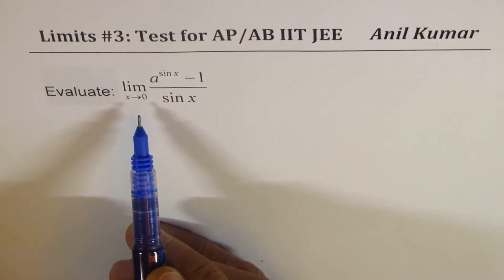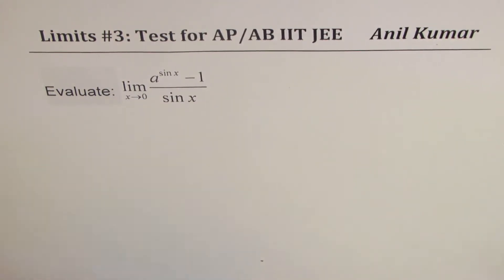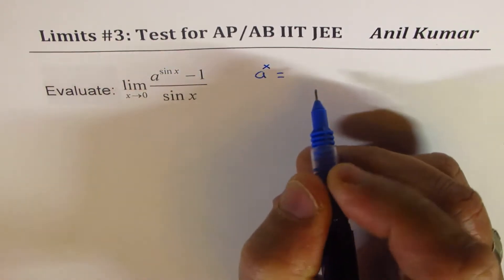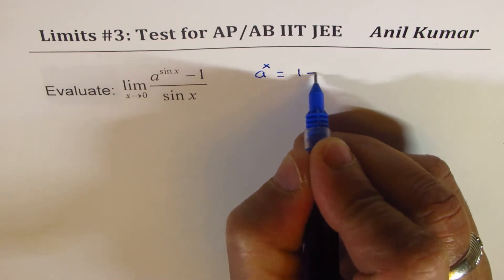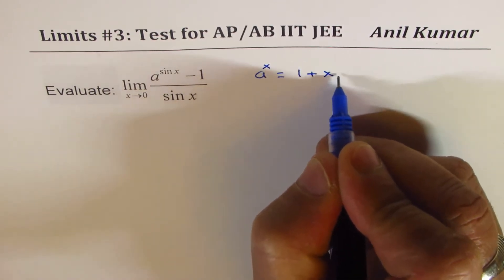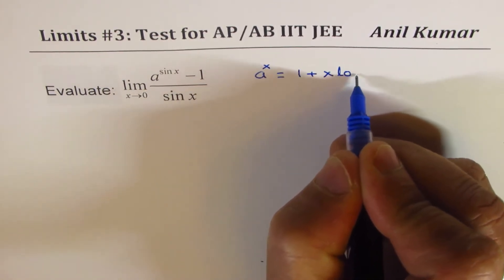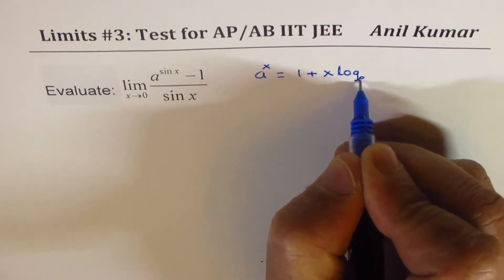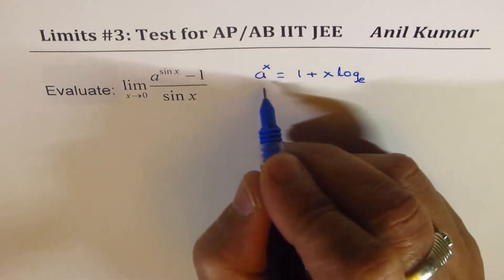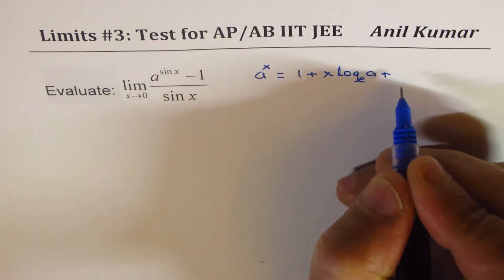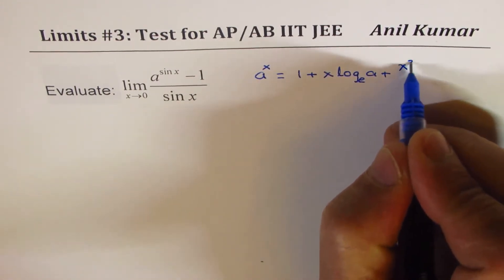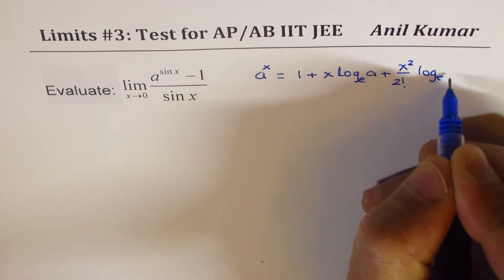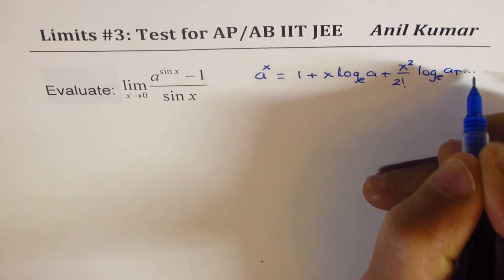So a to the power of x can be written in terms of 1 plus x ln a plus x squared over 2 factorial times log base e of a, plus so on. That is how you can write a to the power of x, and we'll use this expansion to find the limit.